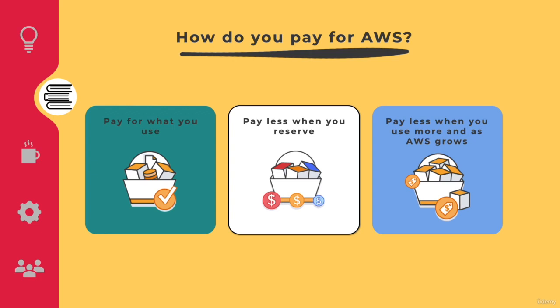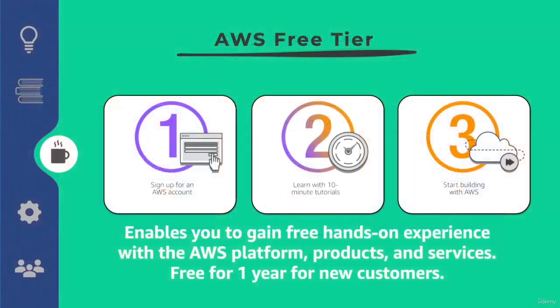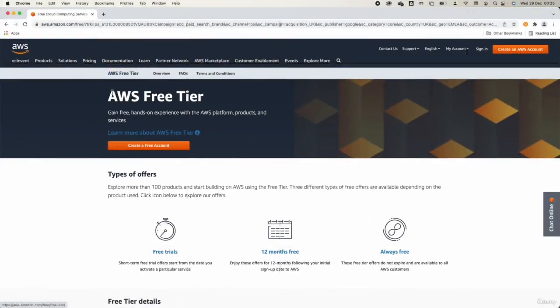When AWS creates more regions, they reduce their pricing model. You can join AWS and create a free tier account for 12 months, which enables you to gain free hands-on experience with AWS platform products and services. You can use this to practice for Cloud Foundation or the Solutions Architect exam. Many services are eligible for the free tier, and others are not. To join, go to aws.amazon.com and create a free account.